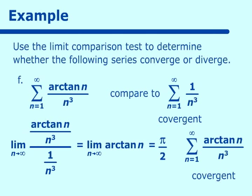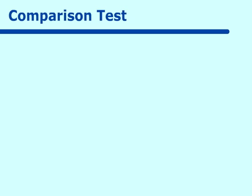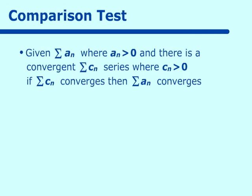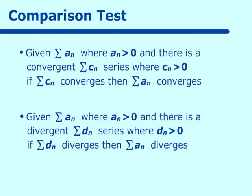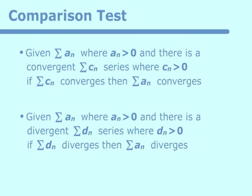These are a few examples of how to use the limit comparison test — a fairly simple test compared to what we'll do next, which is just the comparison test. For the comparison test: given a series a sub n where a sub n is greater than 0, there is a convergent series c sub n where c sub n is greater than 0, and this convergent series has to be larger than a sub n. If we can find a series which is larger than the one we're working on and is convergent, then our original series is convergent. Likewise, for a divergent series we pick a d sub n series which is smaller than a sub n.